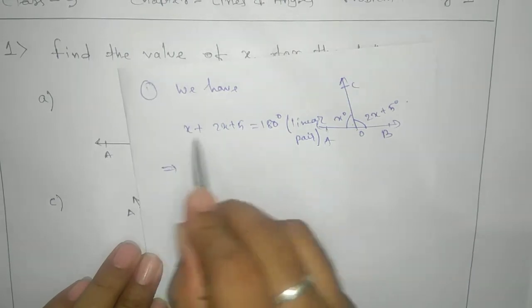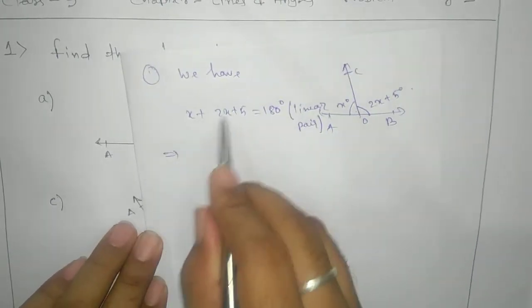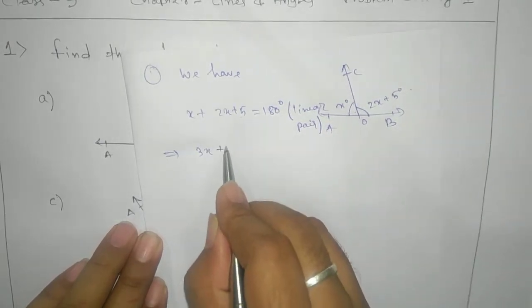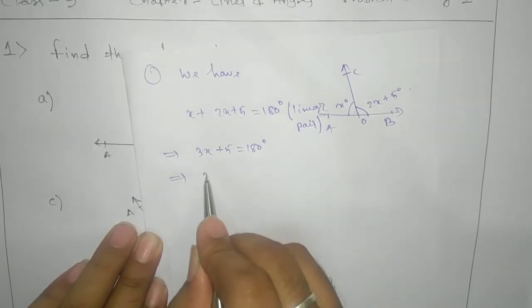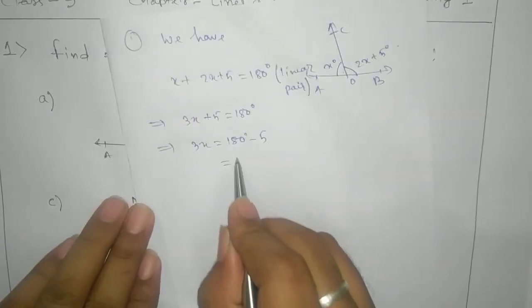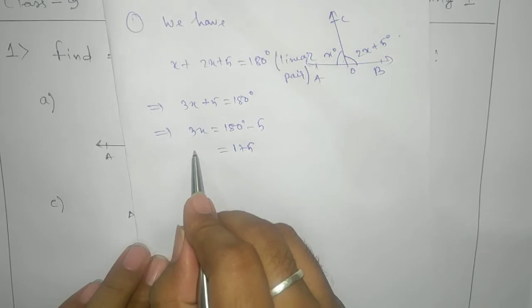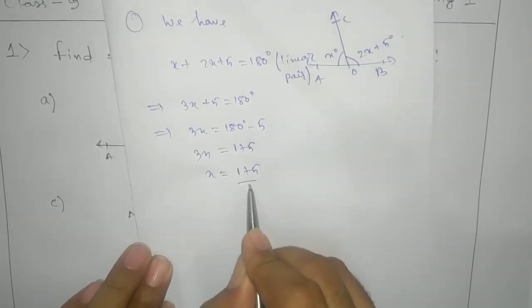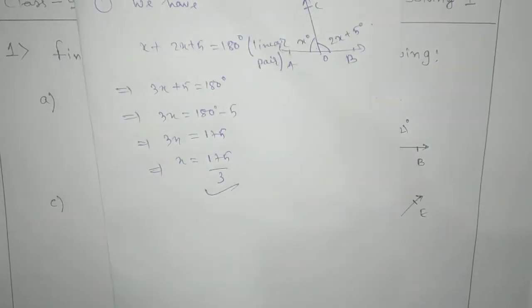Now proceed as in a linear equation. We have 3X plus 5 equals to 180. So 3X equals to 180 minus 5, which gives 175. Therefore X equals to 175 by 3. This is your answer. You can keep your answer in a fraction.